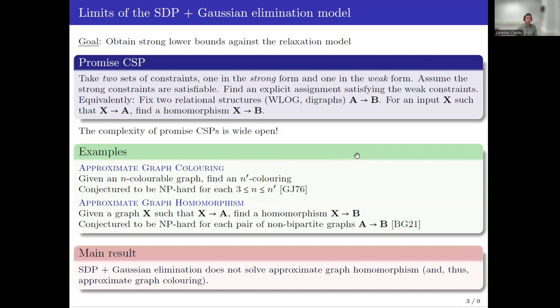The main result of this work is the following: the combined model of semi-definite programming plus Gaussian elimination does not solve approximate graph homomorphism, and in particular does not solve approximate graph coloring.